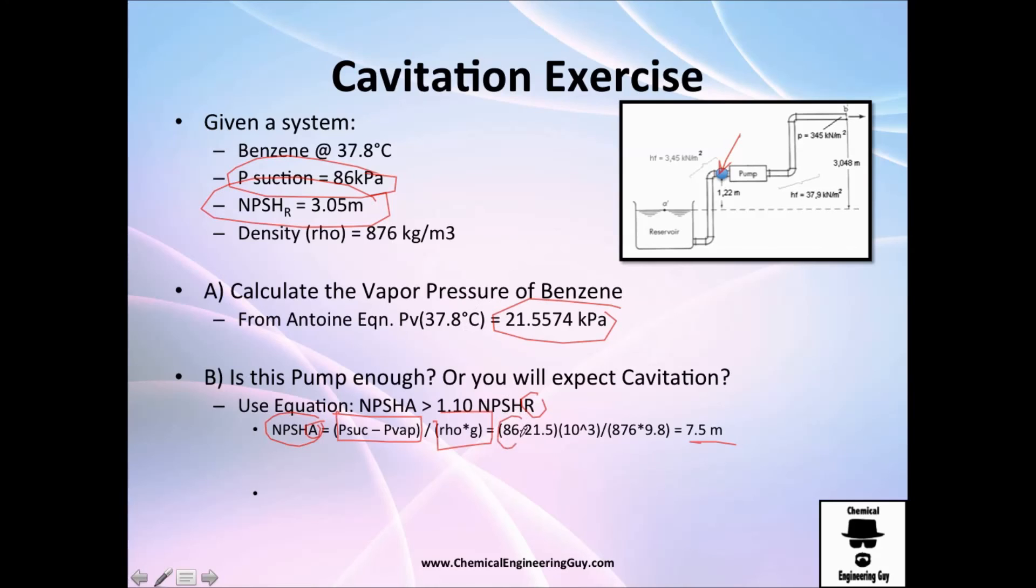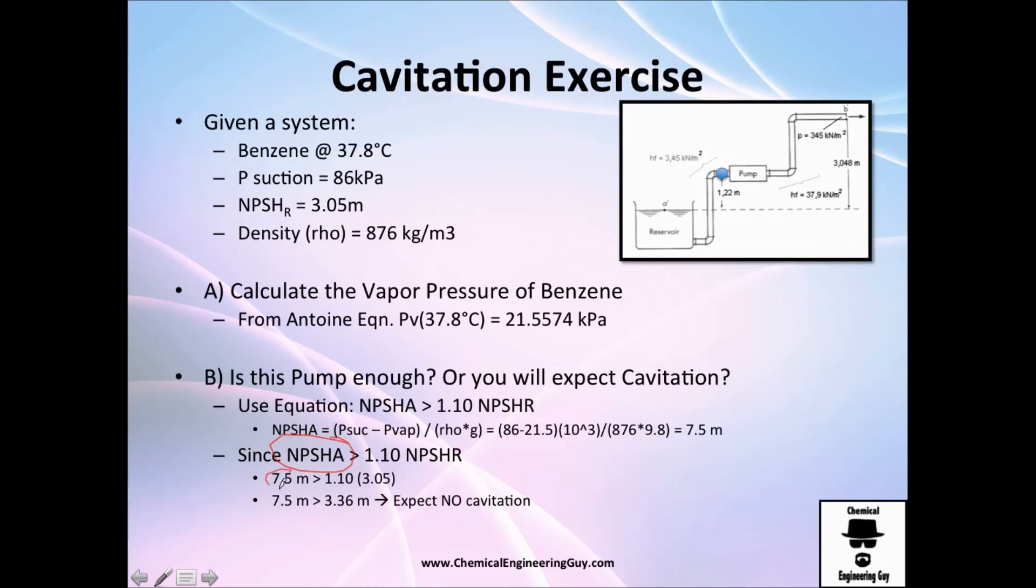Doing this, I got pressure of suction minus vapor pressure. Be sure to change everything to Pascals. We are working right now with kilopascals, so we need to multiply this by 1000, divided by the density and gravity, and I got this value of 7.5 meters NPSH available. The criteria for cavitation is the rule: I got 7.5, is it bigger than 1.10 times the NPSH requirements? Yes, I think it is. I have 7.5, is it greater than 3.36? Yes, it's great, so we will not have cavitation. That's awesome.